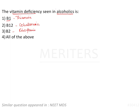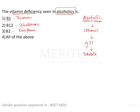So which vitamin deficiency is seen in alcoholics? We have to focus on the alcoholism. The patient who is a chronic alcoholic consumes ethanol, that is ethyl alcohol. As this ethanol enters into the GI tract, into the intestine in the small and large intestine, it inhibits the expression of a specific transporter, namely THTR 1 and 2.